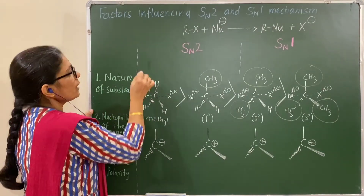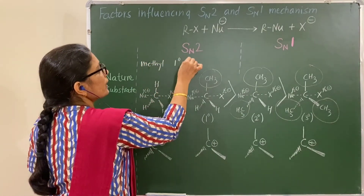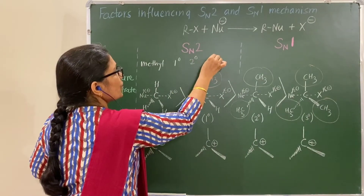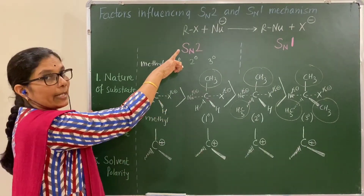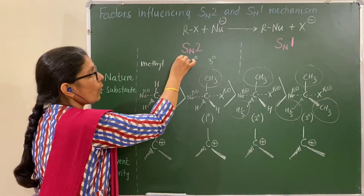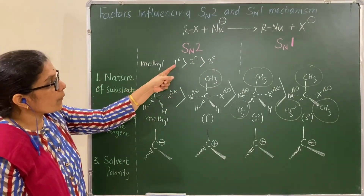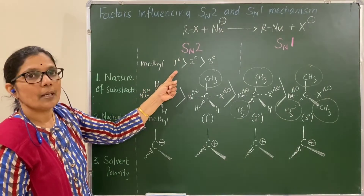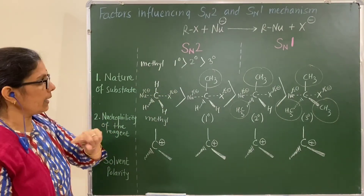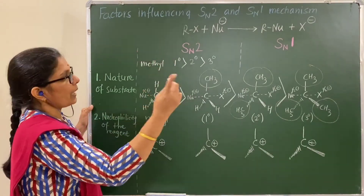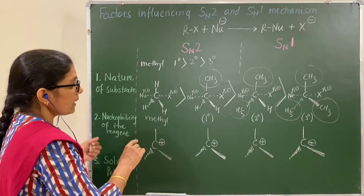Therefore, the stability of the transition state decreases in the order: methyl > primary > secondary > tertiary. The rate of reaction by SN2 mechanism is faster for methyl and primary alkyl halides. SN2 mechanism is favored for primary alkyl halides.